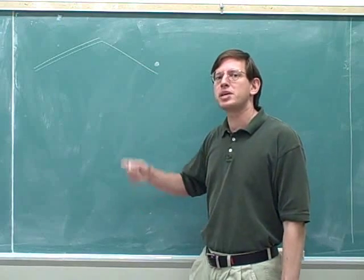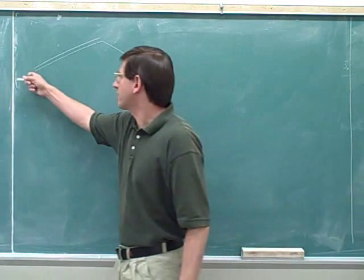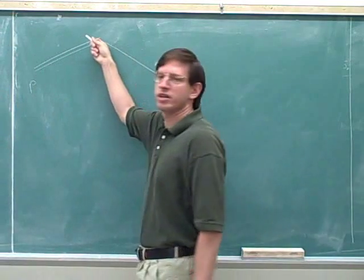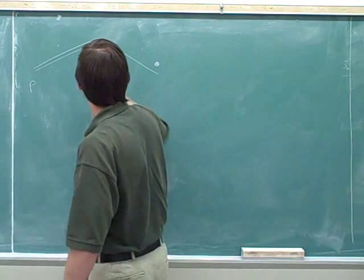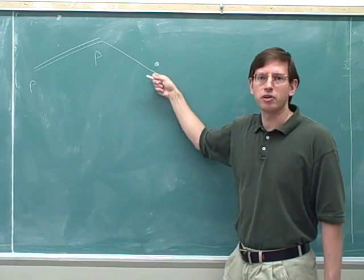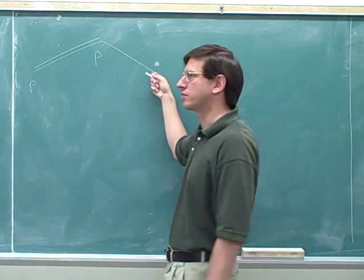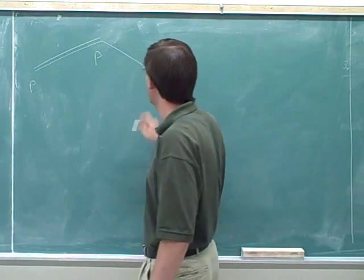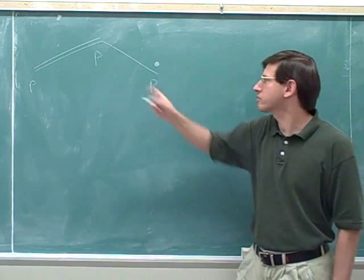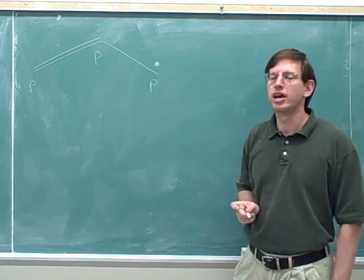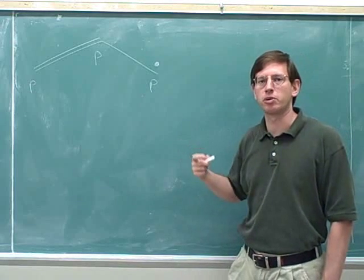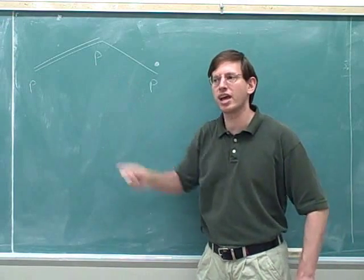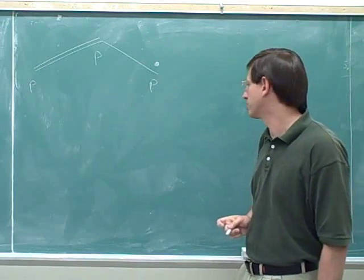We have to count how many pi orbitals there are. This carbon is sp2, so it has a pi orbital. This carbon is sp2, so it has a pi orbital. And this carbon is also sp2 — radicals are also sp2 — so it also has one pi orbital. We have three pi atomic orbitals, and since we're mixing three orbitals together, we get three pi molecular orbitals out. That's conservation of orbitals.